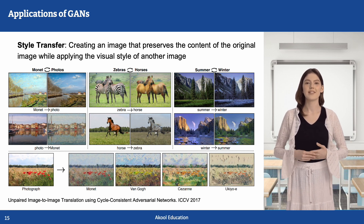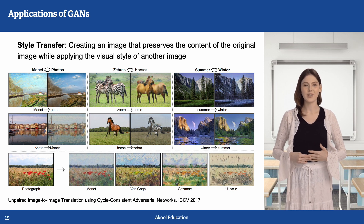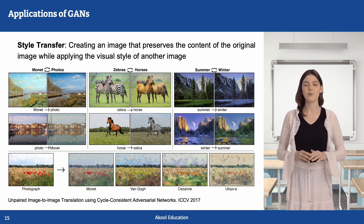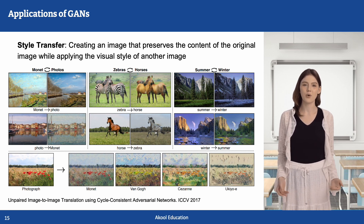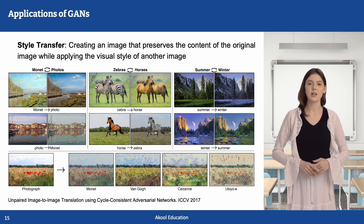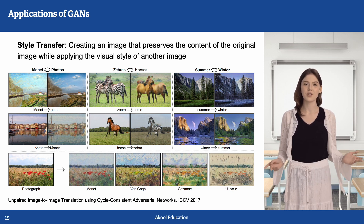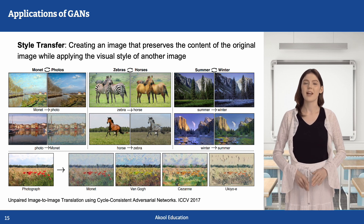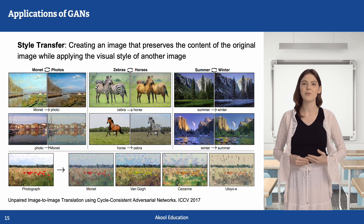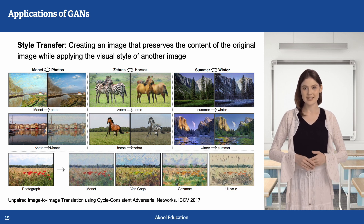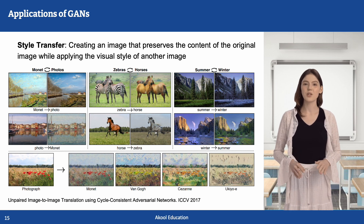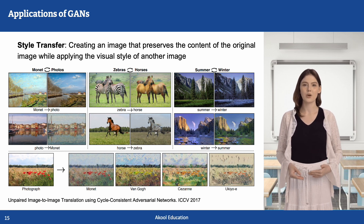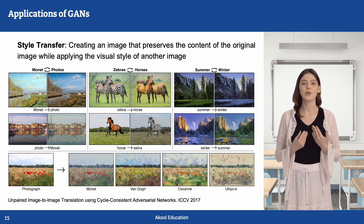CycleGAN consists of two generators and two discriminators, forming a cycle-consistent adversarial process. Given two domains X and Y, one generator converts an image from domain X to domain Y, while the other converts it from domain Y back to domain X. One discriminator distinguishes between real images from domain Y and fake images generated for domain Y, while the other does the same for domain X. To align these two GANs, cycle consistency loss is added. The key concept is that the transformation should be invertible — converting from X to Y and back to X should return the image to its original form — ensuring the transformation is meaningful. The picture illustrates some examples of style transfer using CycleGAN.